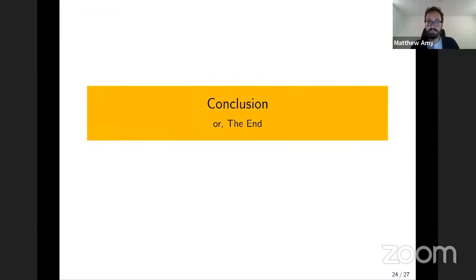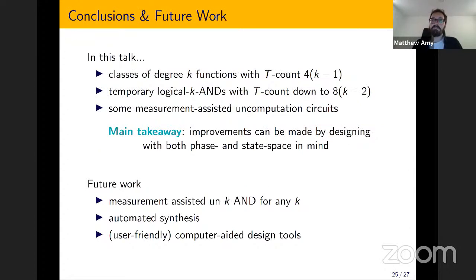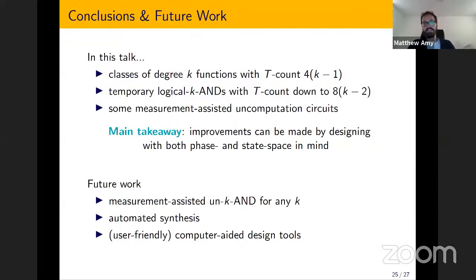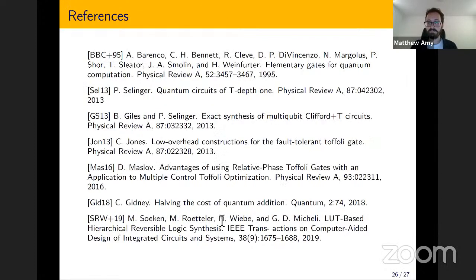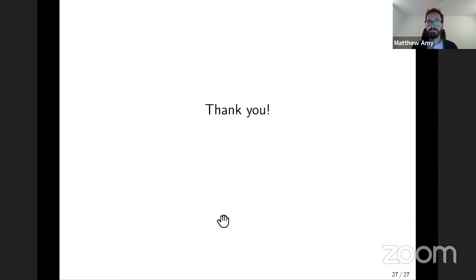That basically concludes everything I wanted to talk about. We gave a bunch of constructions, but the main takeaway is that improvements can be made by designing with both phase and state space in mind. For the future, we need to finish this work in progress, which mostly involves coming up with the general answer for K with measurement, and also automating this entire process — which was the goal in the first place. Thanks.